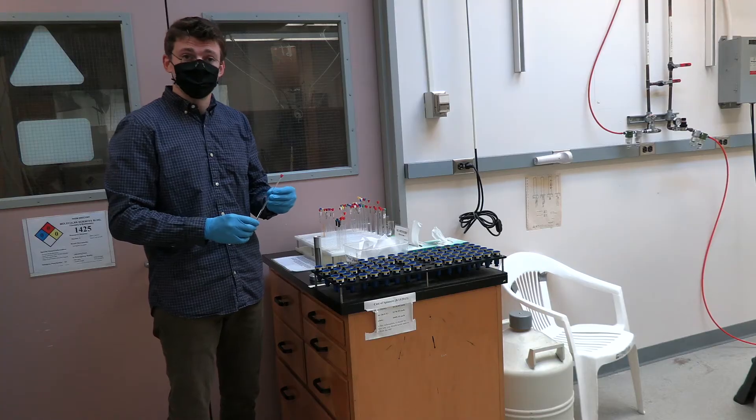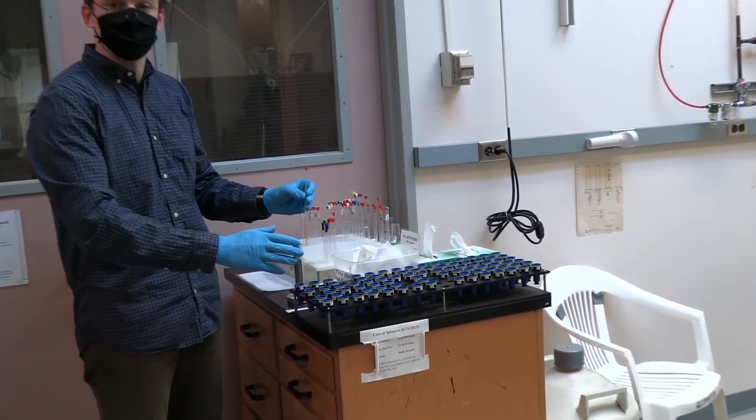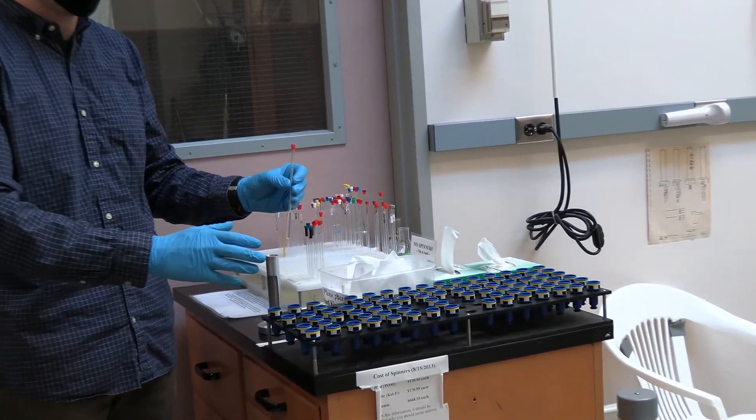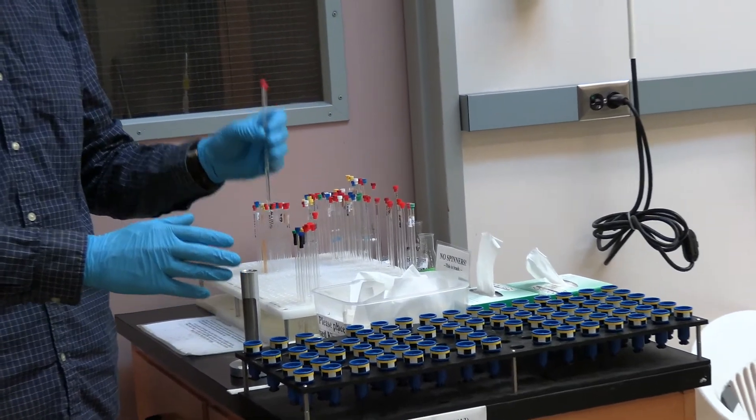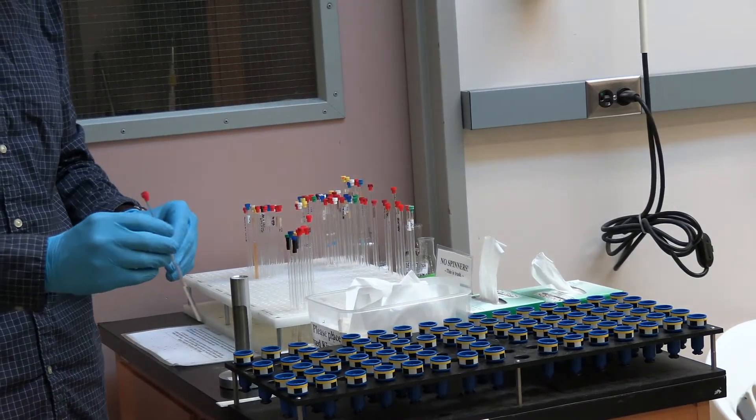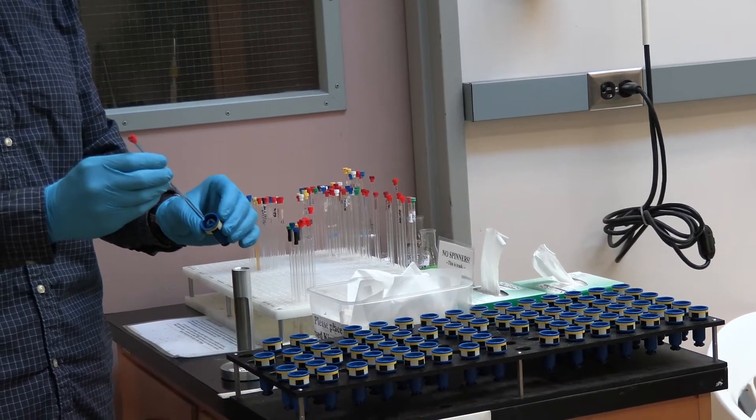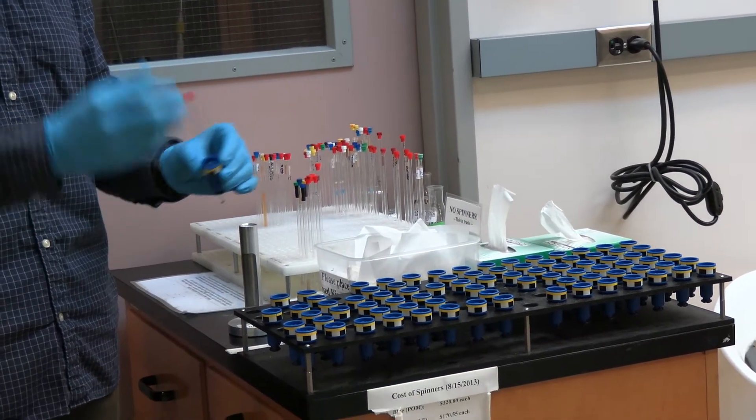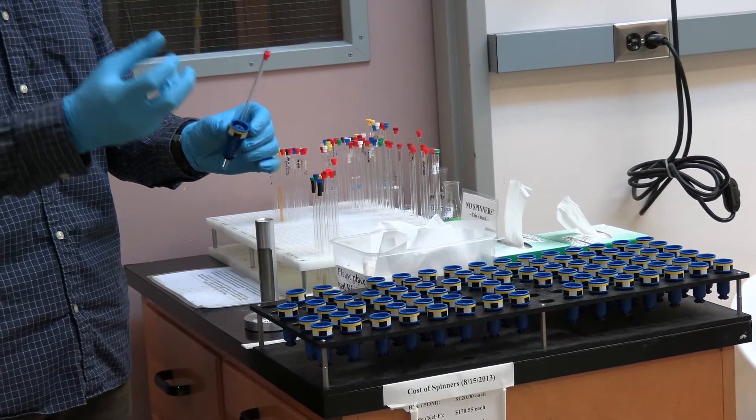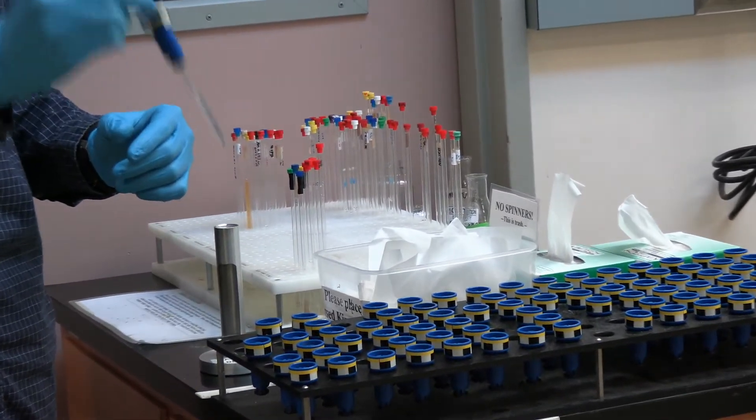The next step when preparing your NMR sample is choosing the appropriate spinner. There are 120 spinners located at the sample prep station and only 120 spots on the carousel, so ideally you should never have to grab a spinner from one of the other instruments.